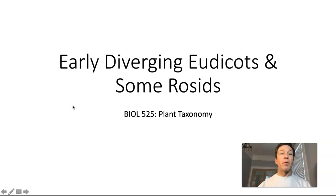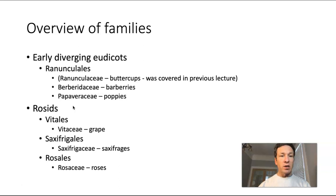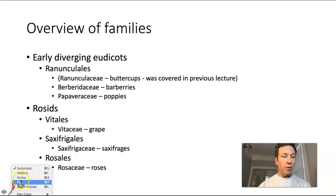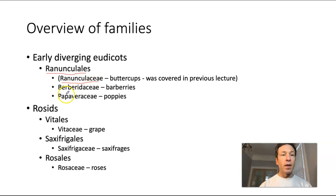Let's begin today's lecture. We will be talking about early diverging eudicot families, as well as some rosid families. To give you an overview, we will start with early diverging eudicots, which includes the order Ranunculales — an order we have already started talking about. Specifically, we've already talked about Ranunculaceae, the buttercups.